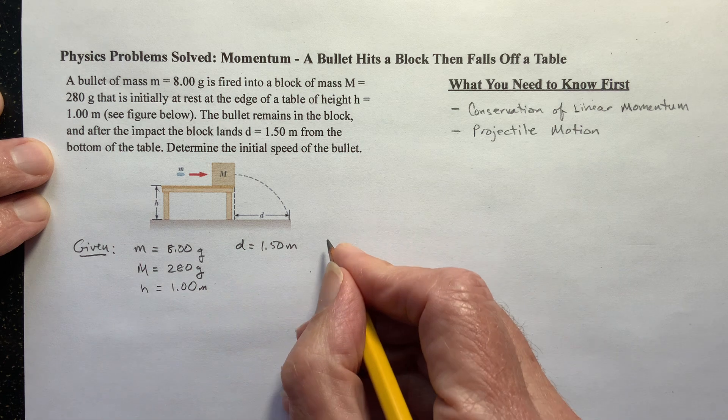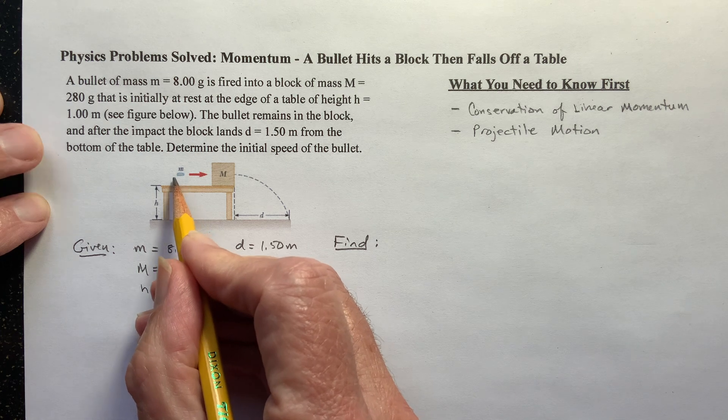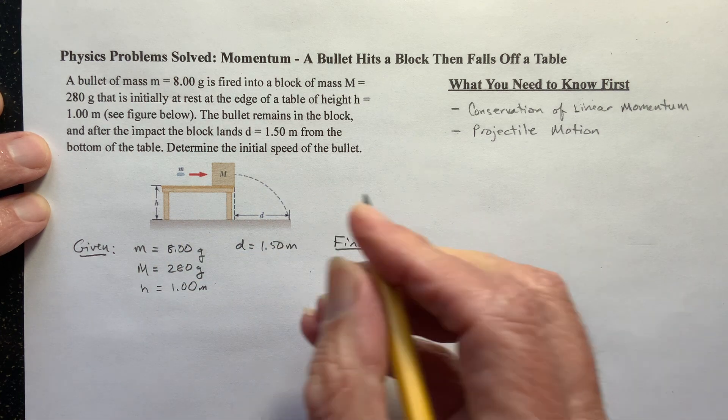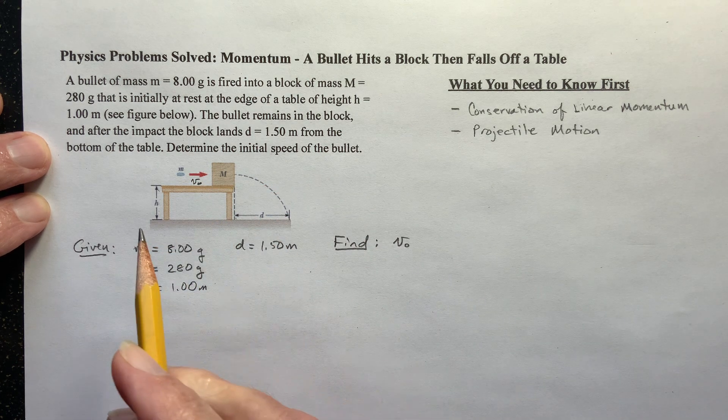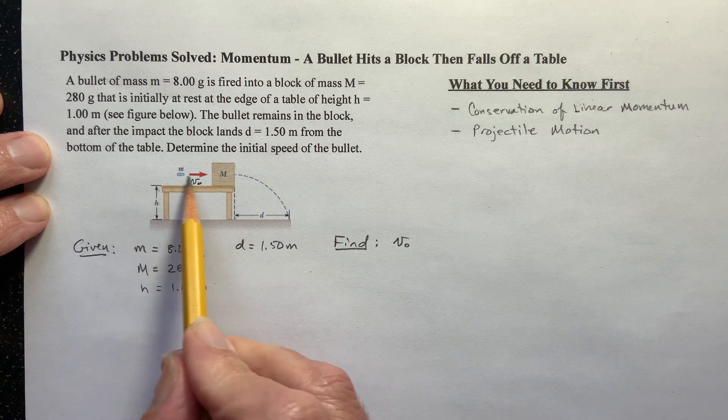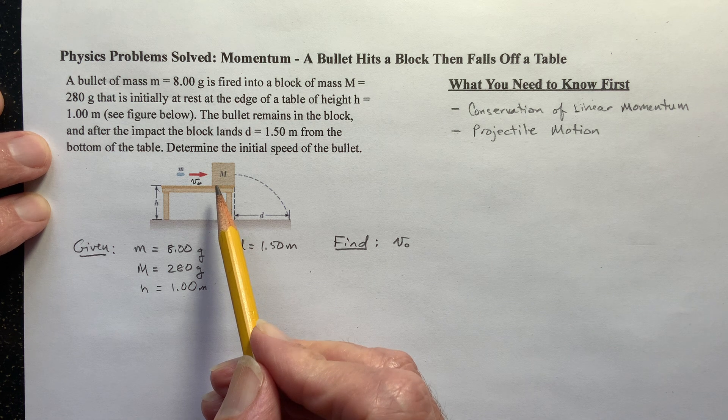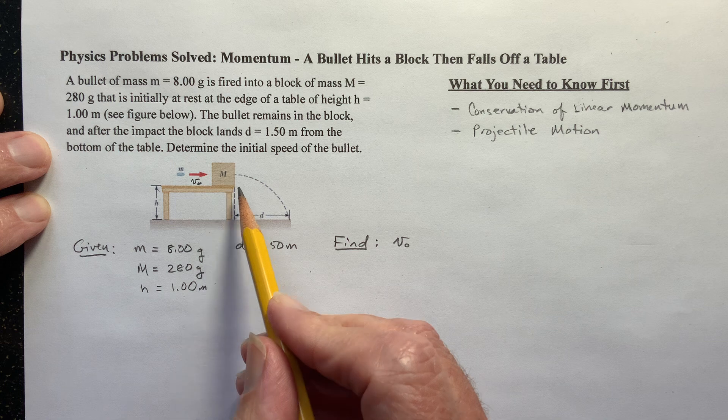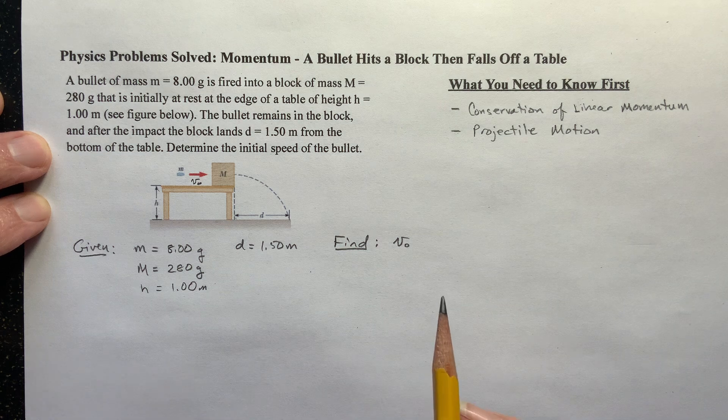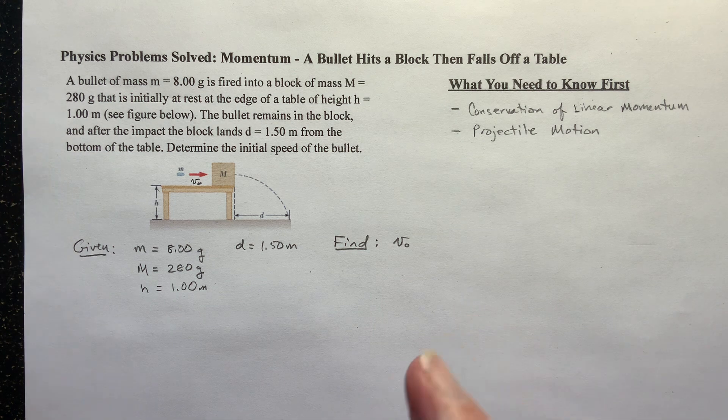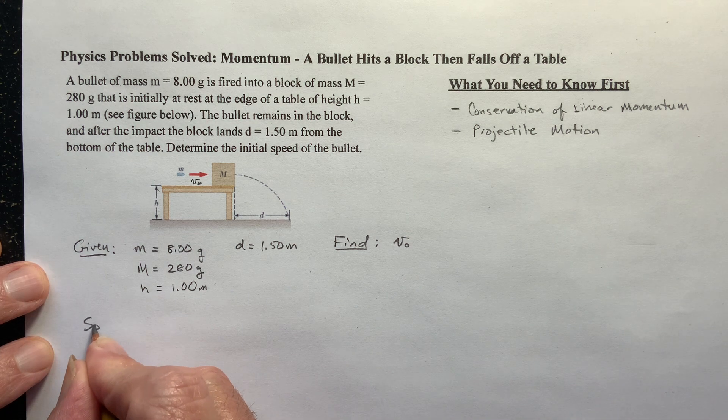And what are we trying to find? Well, that initial velocity of the bullet, which I'll call v-naught. So this will be v-naught, I'll just label it like that on the drawing. So here's what's going to happen: this bullet's going to hit the block, and that should look like a collision to you, a perfectly inelastic collision since the bullet is embedded in the block. And then this bullet-block system is going to fall off the table, and that should look like projectile motion to you. So we're going to use both of these ideas to solve this problem.